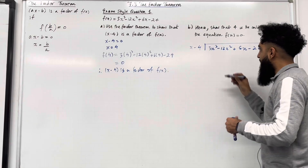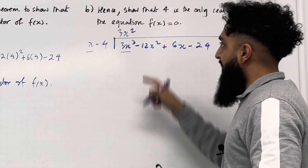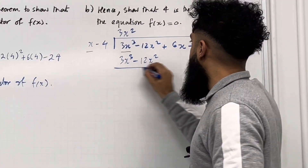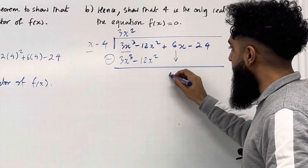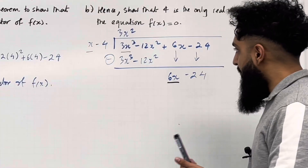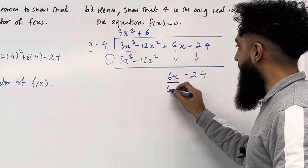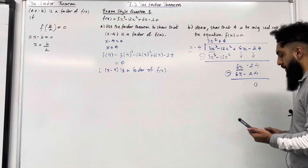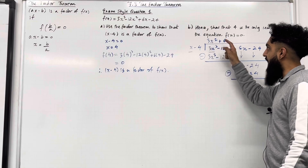First, divide 3x³ by x, giving 3x². Expand 3x² with (x − 4): this gives 3x³ − 12x². Subtracting these polynomials gives 0, 0. Bring down 6x and −24. Now divide 6x by x, giving positive 6. Expand 6 with (x − 4): this gives 6x − 24. Subtract these polynomials and we get 0. The remainder is 0, so the quadratic is a factor of the function.